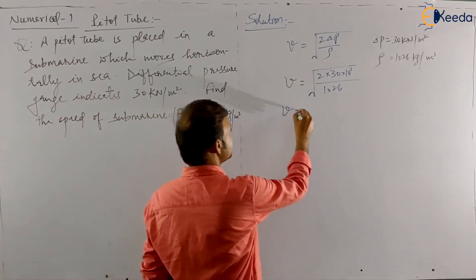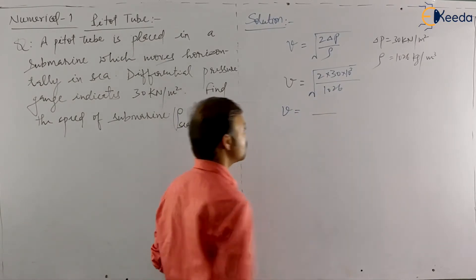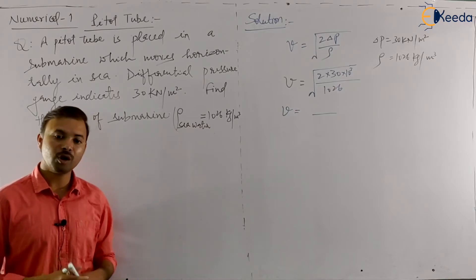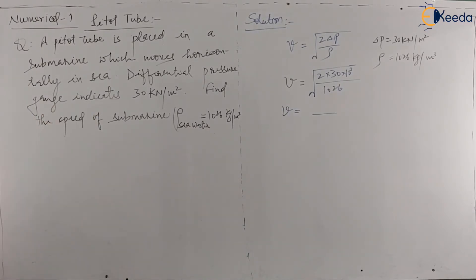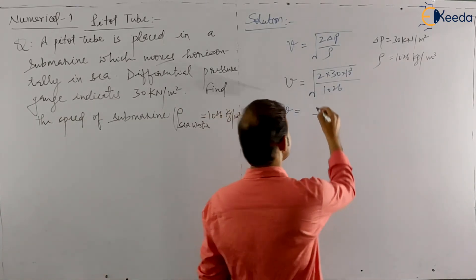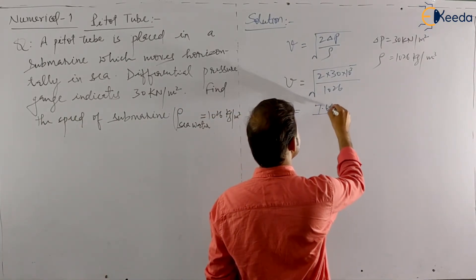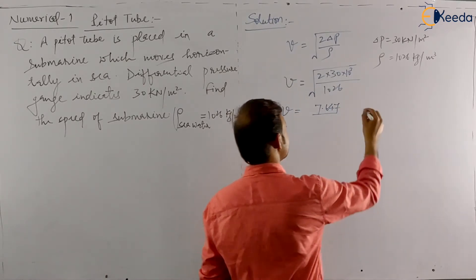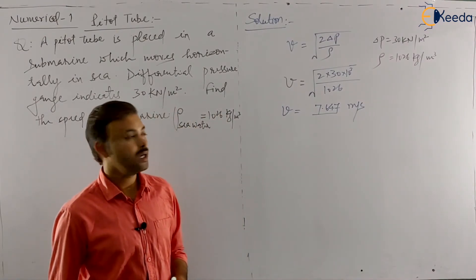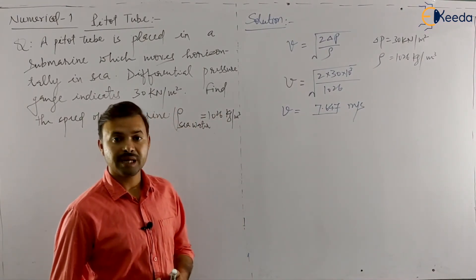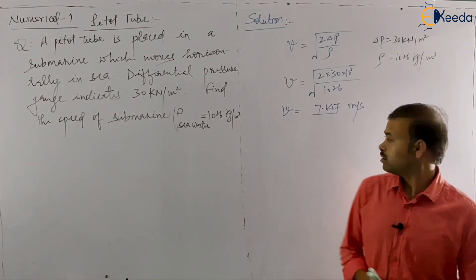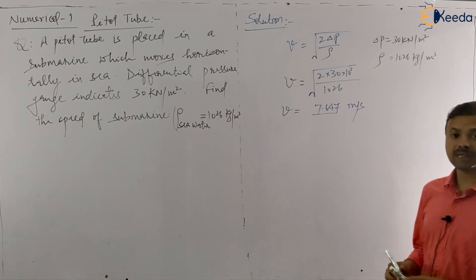So for this we will get V, velocity of the fluid or flow rate of the fluid. The value will be 7.647 meter per second.